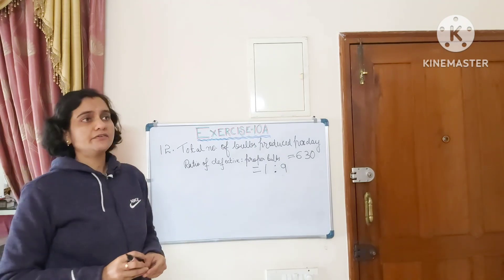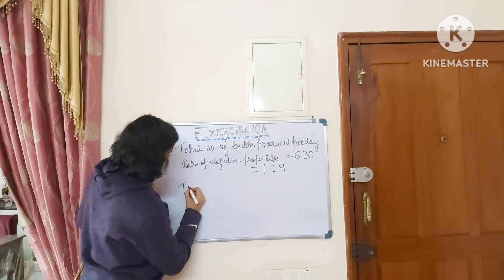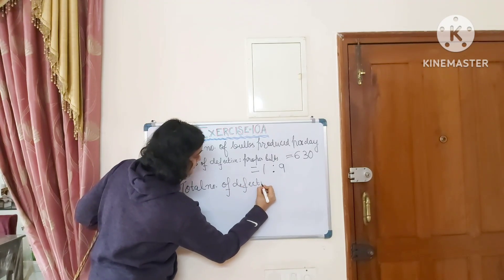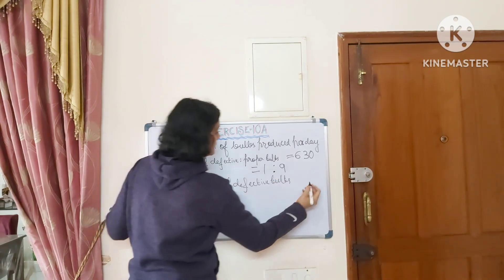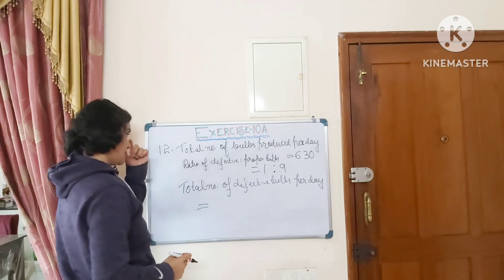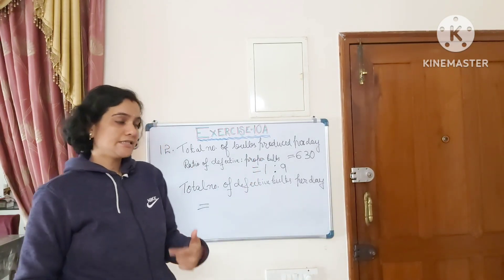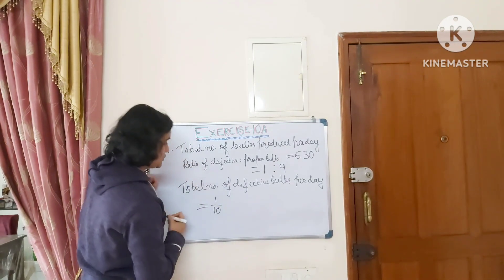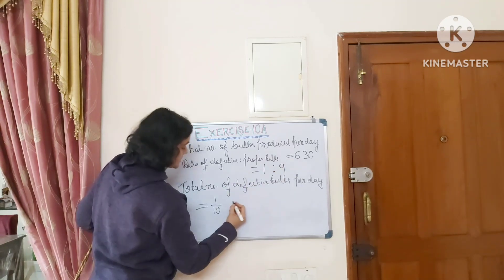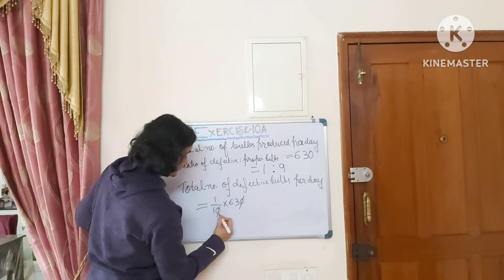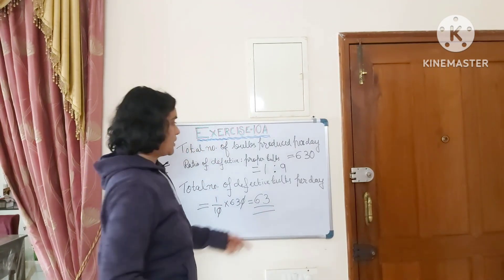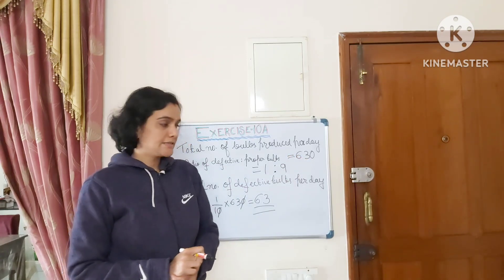To find the total number of defective bulbs produced per day: the ratio is 1 by 10, so we take 1 by 10 of 630. Cancelling the common zero: 1 into 63 equals 63. So per day, 63 out of the 630 bulbs produced are defective.